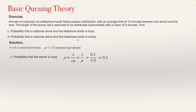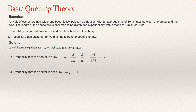For question D, if rho is the probability that the server is busy, then the probability that the server is not busy — that is, the probability that the telephone booth is empty — is 1 minus rho, which equals 0.7. So we have solved question D.